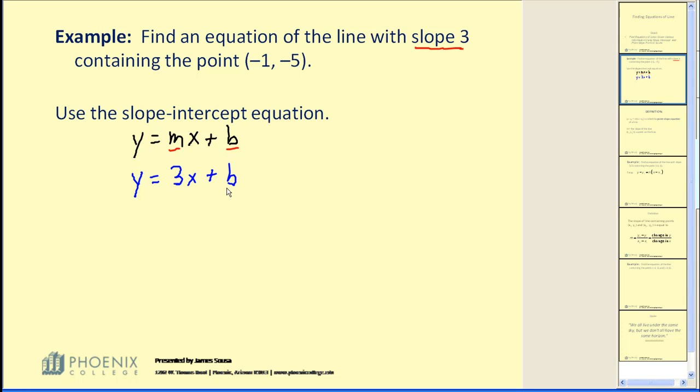Now we need to find the y-intercept. But they do give us one more point that is on the line. Remember that if a point is on a line it must satisfy that equation. So when x is -1, y has to be -5. We can use these values to substitute them into this equation. When we do this there will only be one unknown, which will allow us to solve for the value of b.